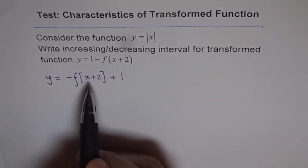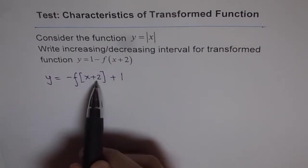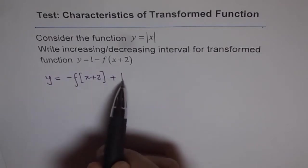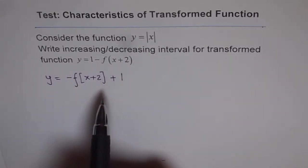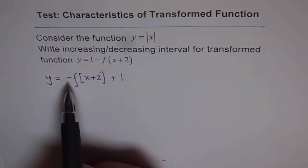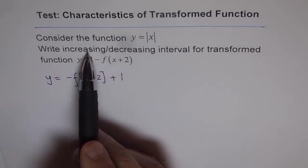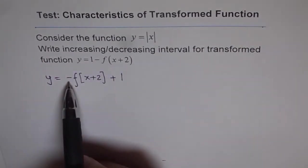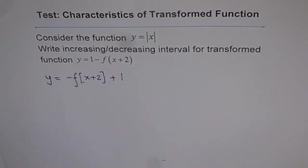we should write this as y equals minus f of x plus 2 plus 1. So that gives you very clearly that here we have vertical reflection on x-axis, translation 2 units to the left and 1 unit up. Now this is going to transform the function and thereby this reflection is mainly going to affect increasing and decreasing. The increasing interval becomes decreasing interval because of this reflection, and the decreasing will become increasing. So it swaps the intervals.